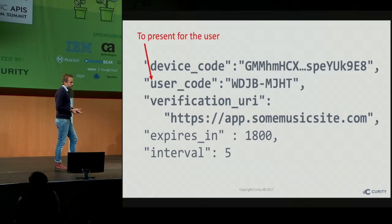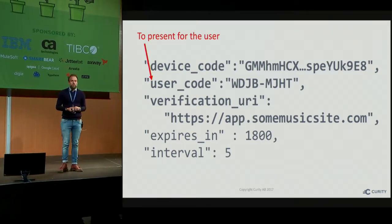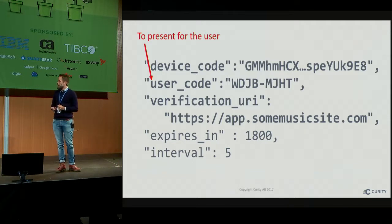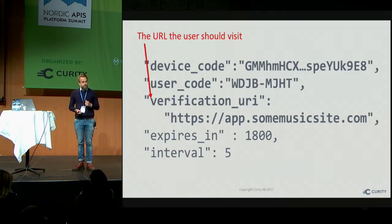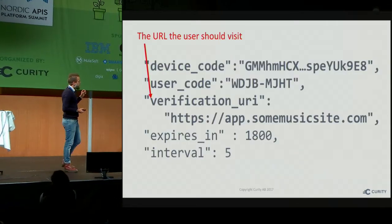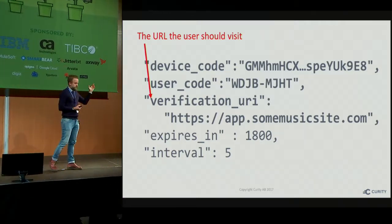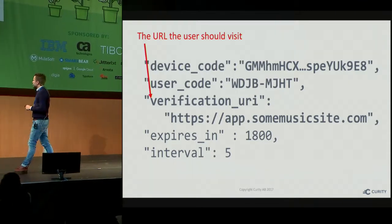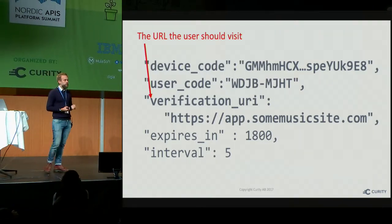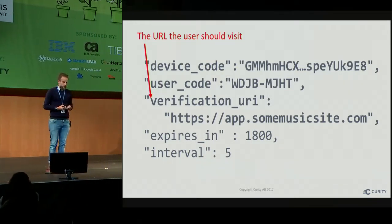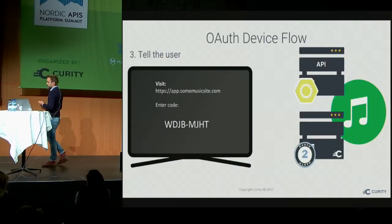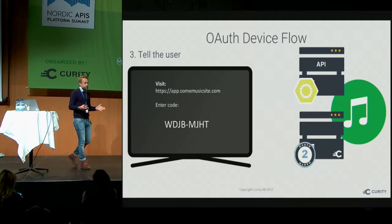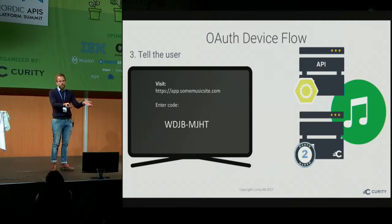The user code needs to be handed to the user so they can take action on their side. The user does this by visiting the verification URI. The server says: if you don't complete this within 30 minutes, it's lost — and you should check in with us every five seconds, essentially telling the device to start polling. On the TV, you could display a short URL and a code saying: go to this URL and enter this code. You've probably seen something like this already — many services do something similar.